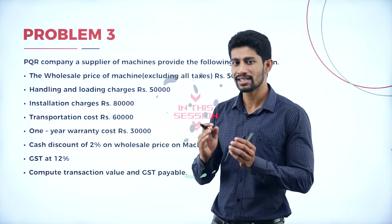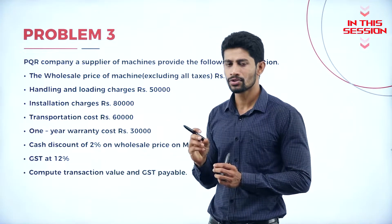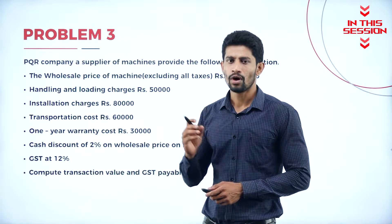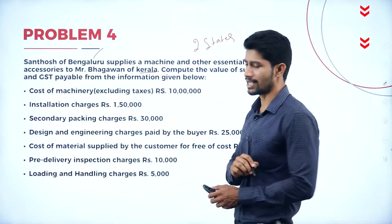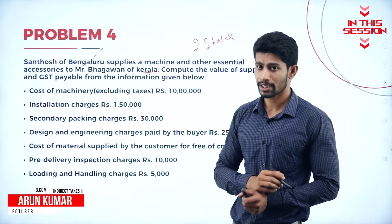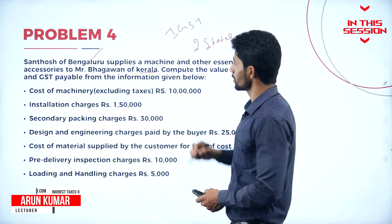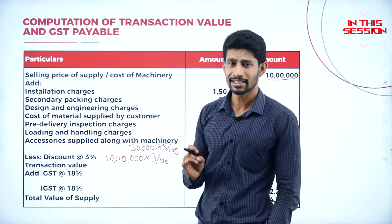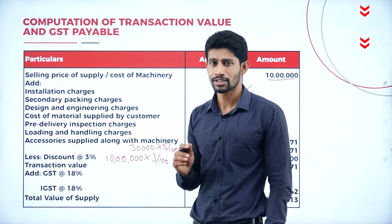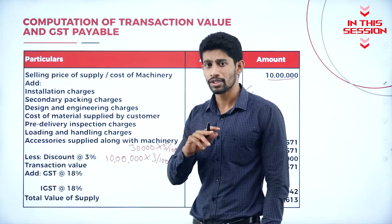Find out the transaction value and GST payable, and if you total both the values, whatever the total amount you get, that total is called value of supply. So if the transaction is happening between two states, which tax is applicable? IGST is applicable. CGST and SGST we are not calculating, because the transaction is not happening within the state — it is happening between two states.